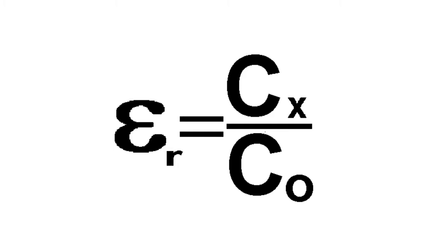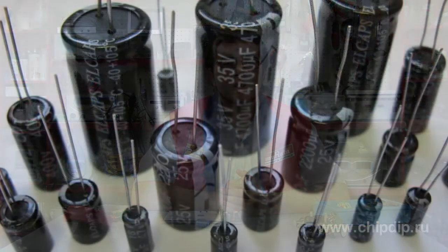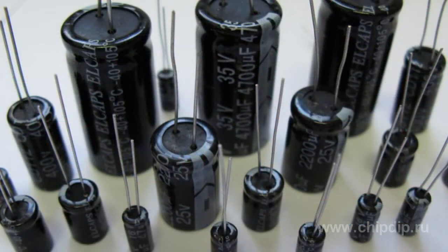Dielectric permittivity is one of the key parameters in the development of electric capacitors. Using materials with a high dielectric constant can significantly reduce the physical size of capacitors. The capacitance of a capacitor is determined by the following formula, where epsilon_r is the dielectric constant of the material between the plates.